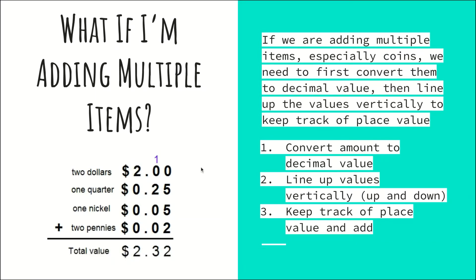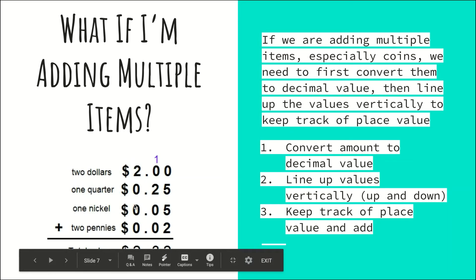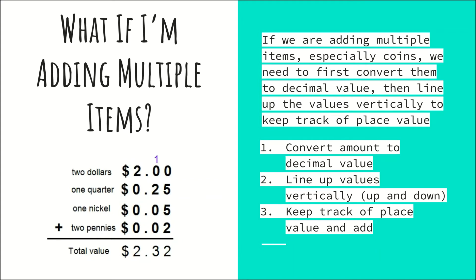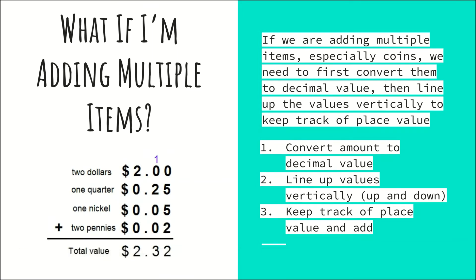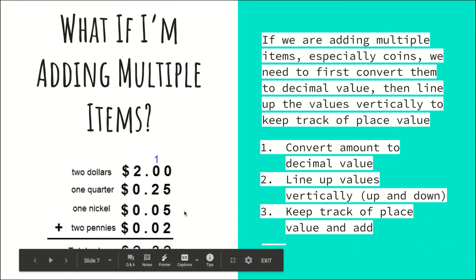A quarter is 25 cents, so you write zero dollars and point twenty-five — the two is in the tenths place, the five is in the hundredths place. A nickel is written as zero dollars and five cents; the five goes two places to the right of the decimal point in the hundredths place, because a nickel is five one-hundredths of a dollar. Two pennies would be written as zero dollars and two cents, with the two in the hundredths place.